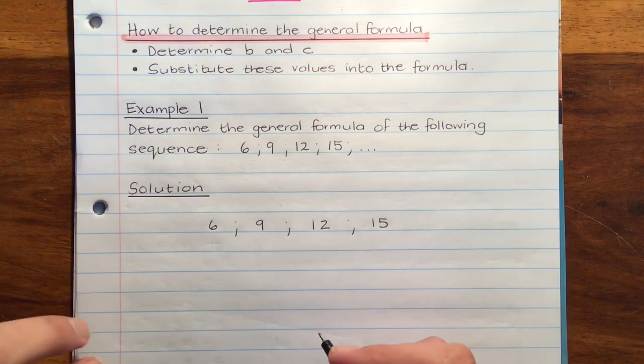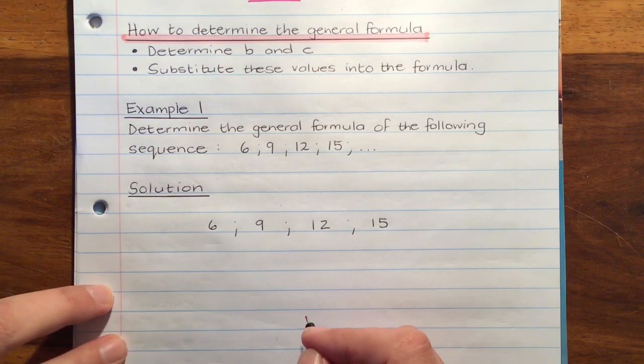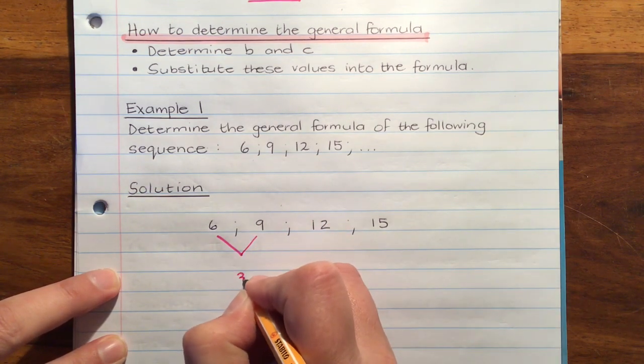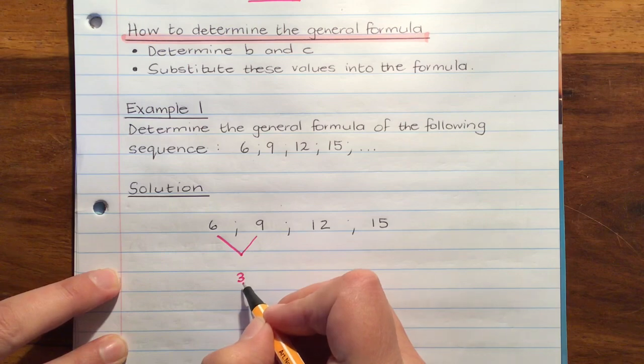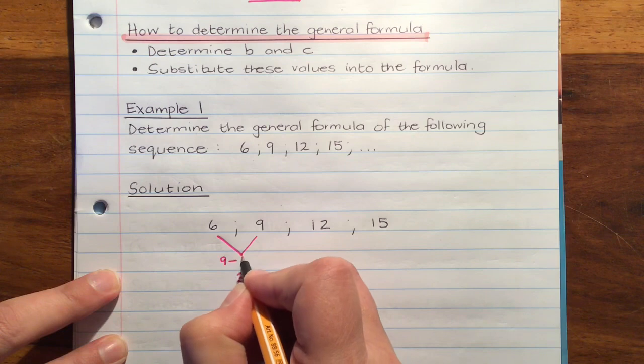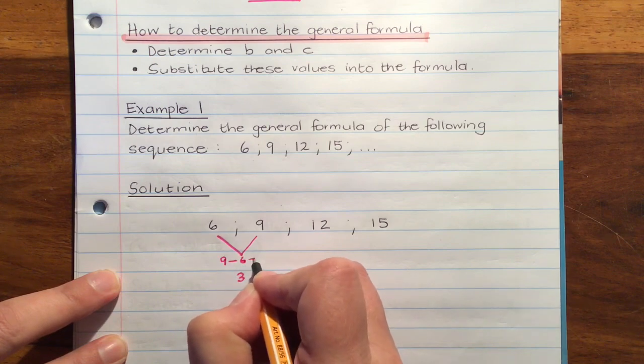The first thing we need to do is determine what the common difference is. So the difference between 6 and 9 is 3. How we determine that that's positive 3 is we said 9 minus 6. It's always a term minus the previous term.